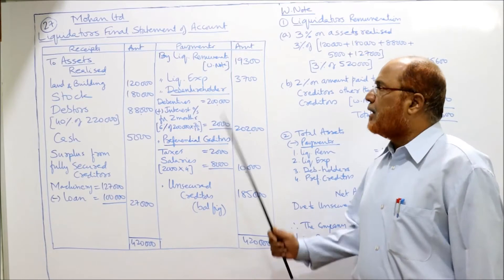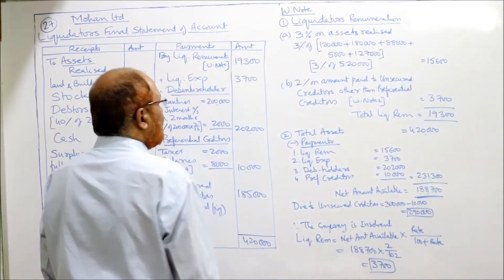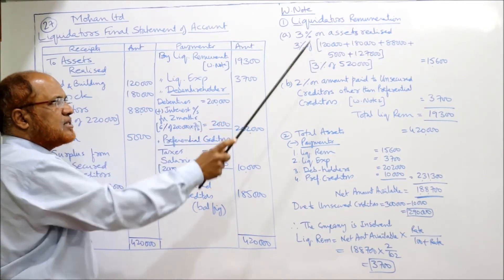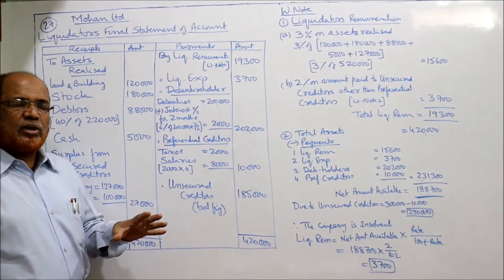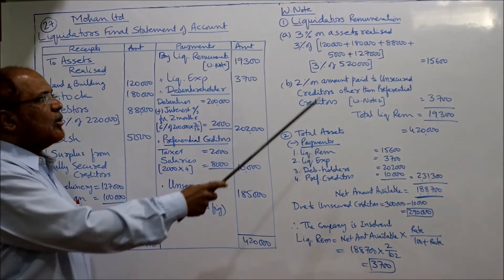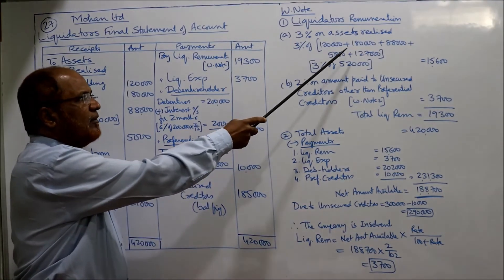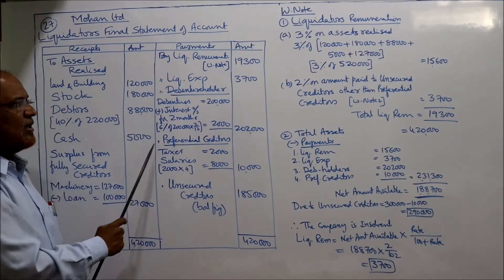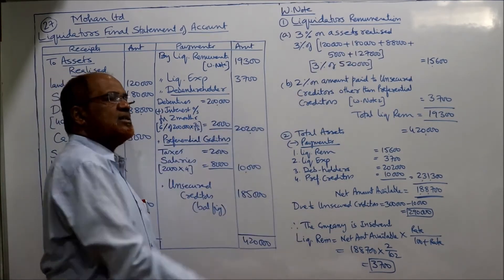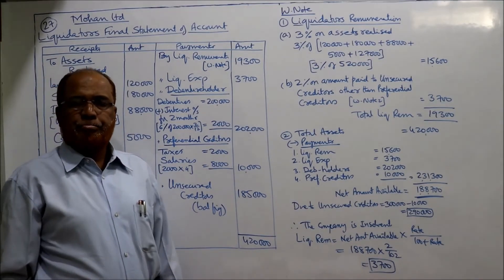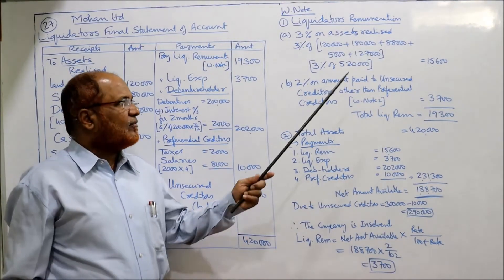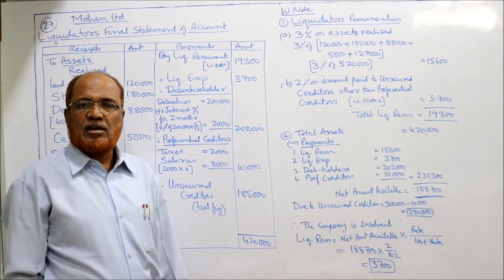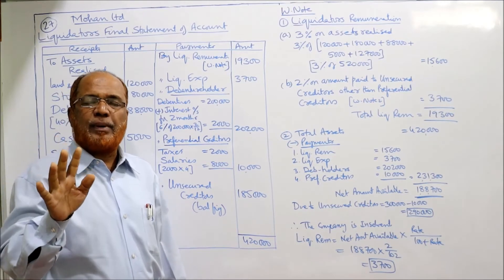In working notes, calculate liquidator's remuneration. 3% on assets realized: land and building Rs.1,20,000 + stock Rs.1,80,000 + debtors Rs.88,000 + cash in hand Rs.5,000 + machinery Rs.1,27,000. Total assets realized = Rs.5,20,000. So 3% of Rs.5,20,000 = Rs.15,600.